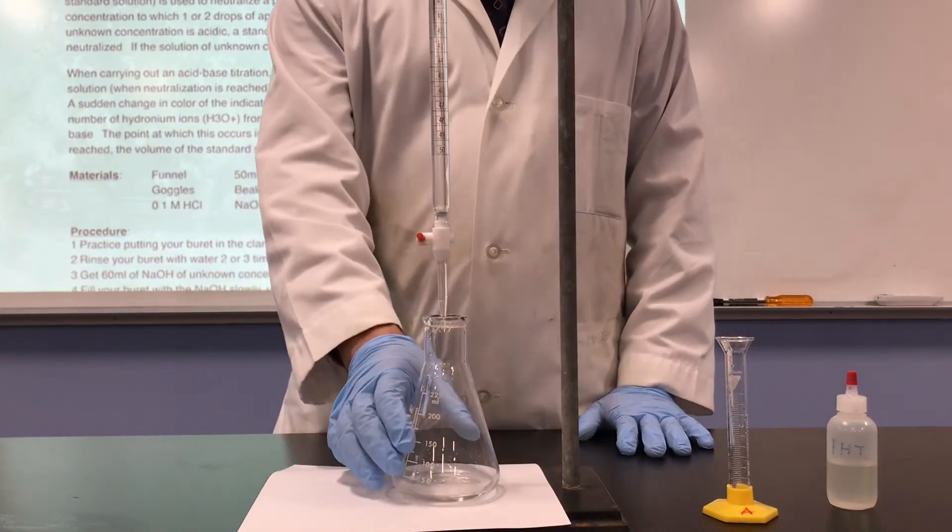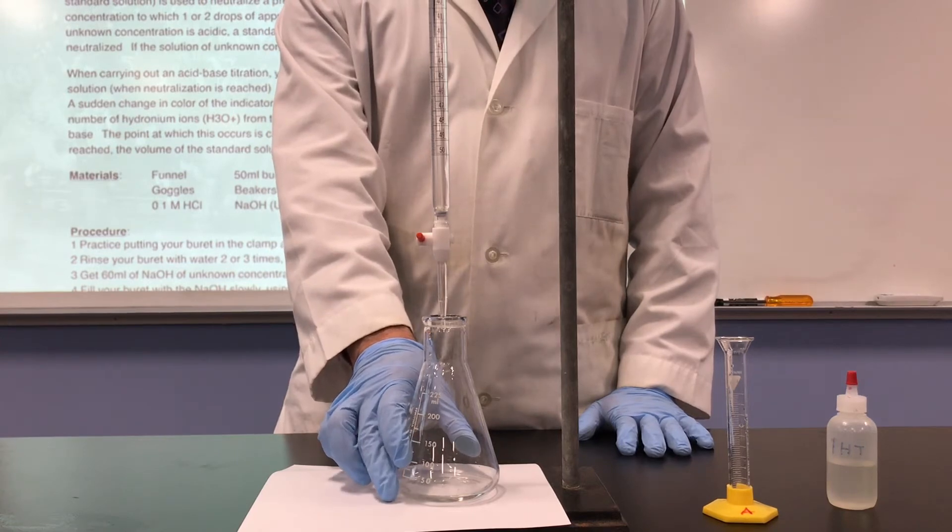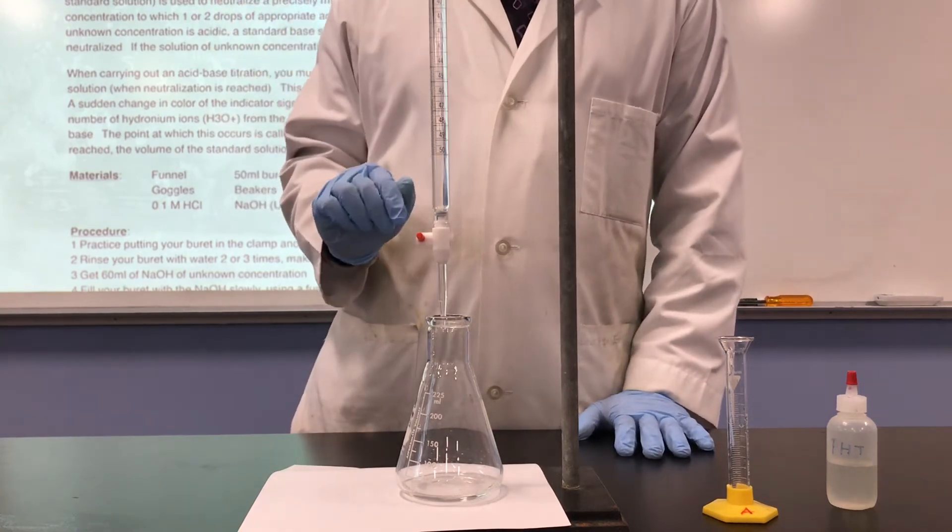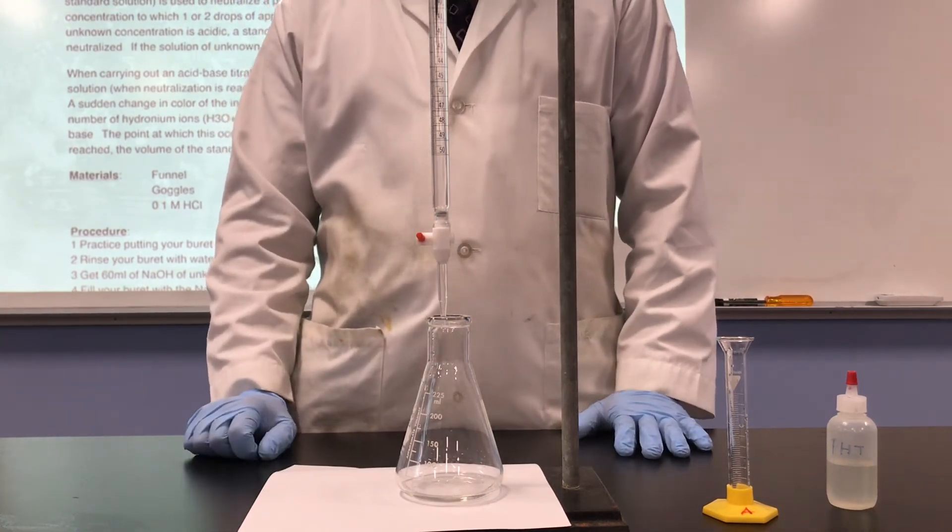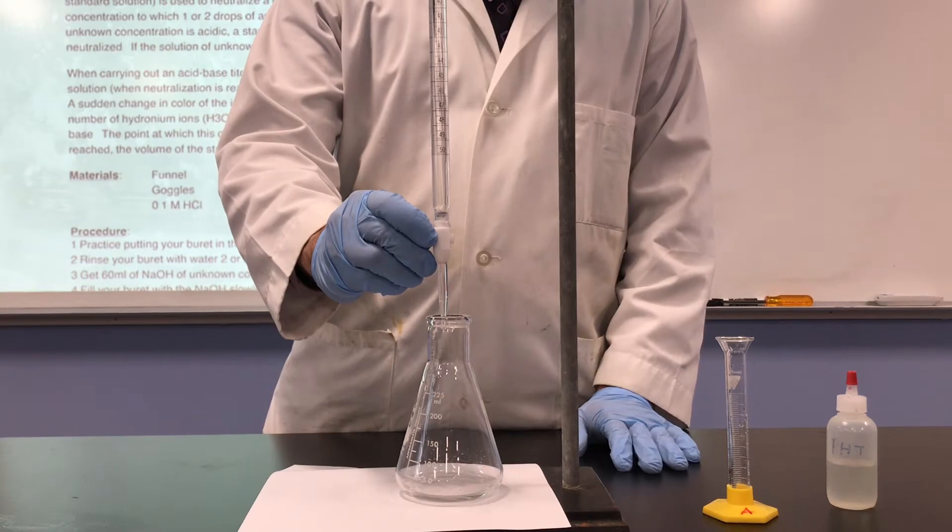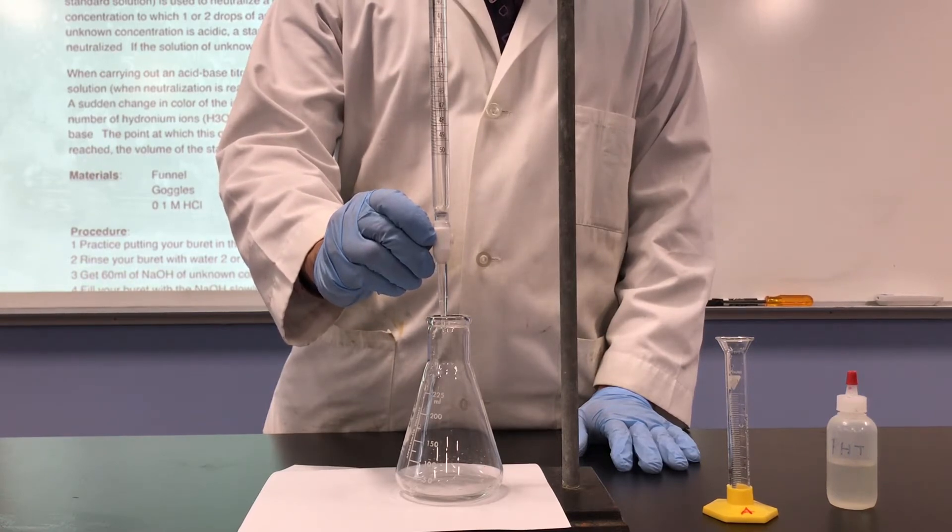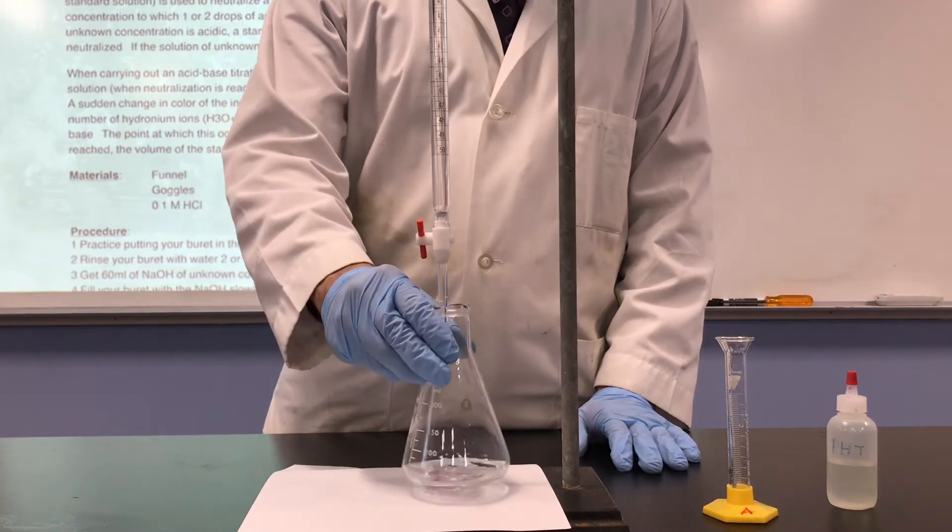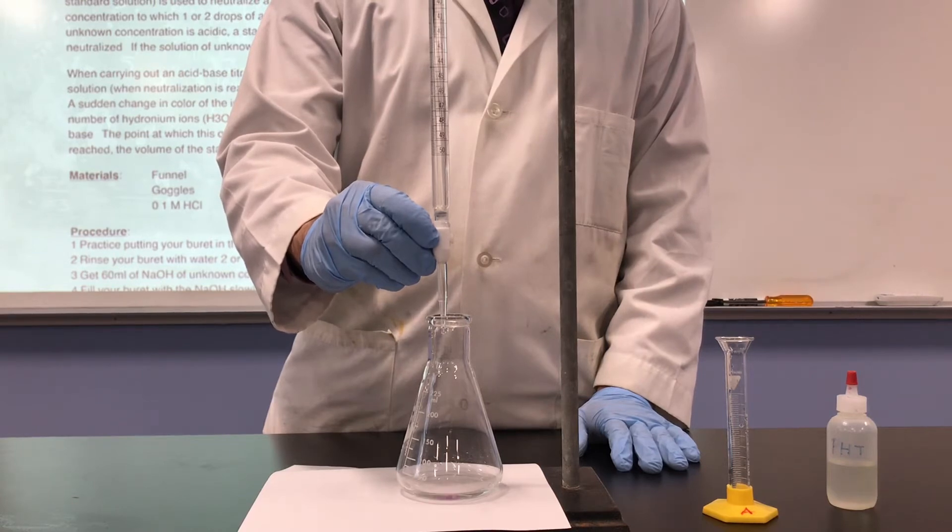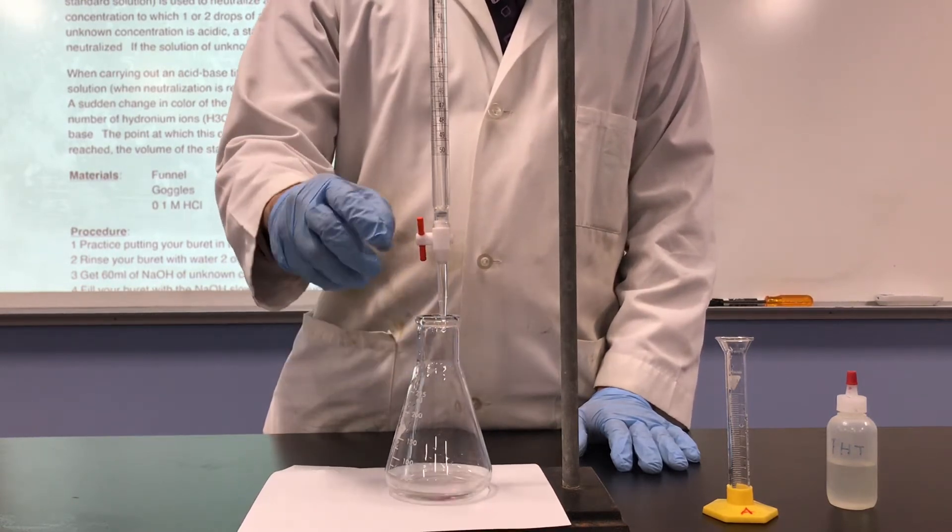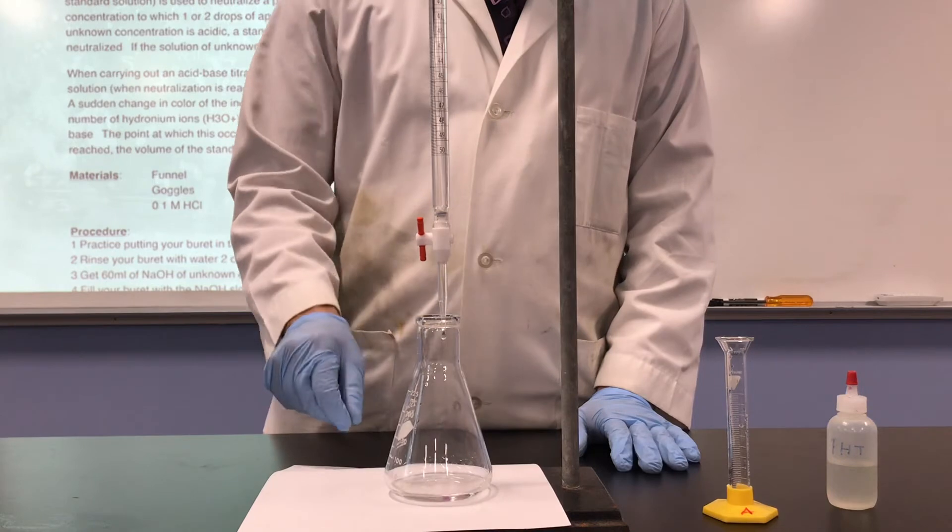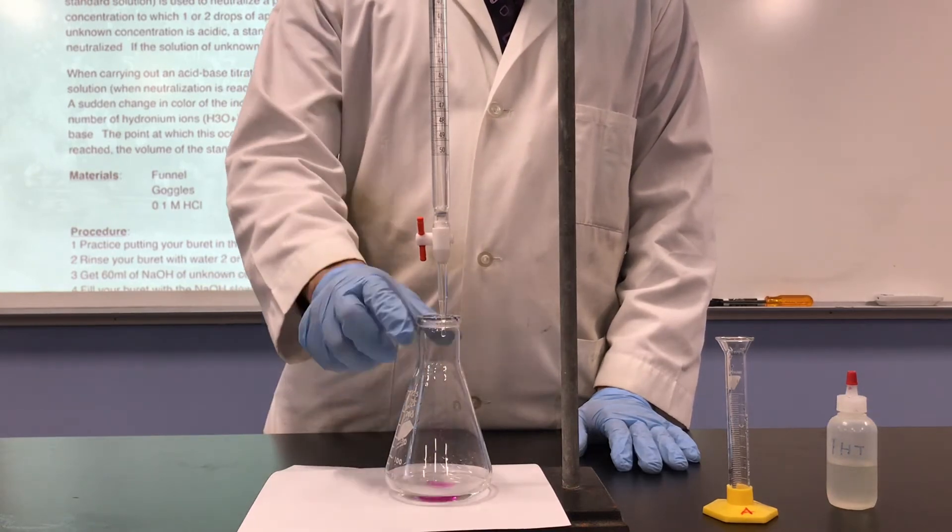So now that we carefully added 10 milliliters of hydrochloric acid and phenolphthalein into the flask, and we have our burette filled with 50 milliliters of 0.25 molar NaOH, now we can perform our titration. We're going to start off slowly by turning the stopcock to the parallel position and let the base titrate into the flask.